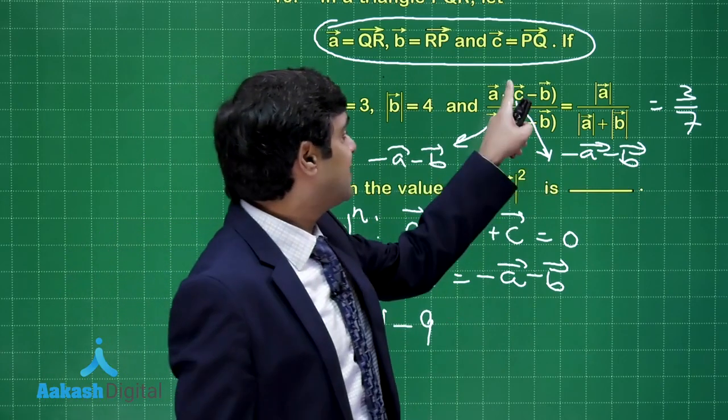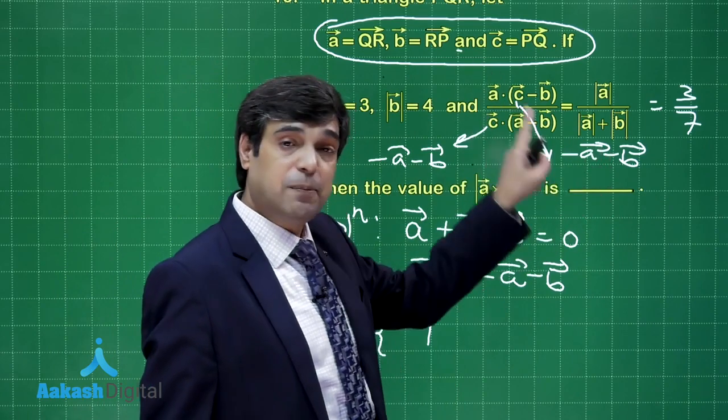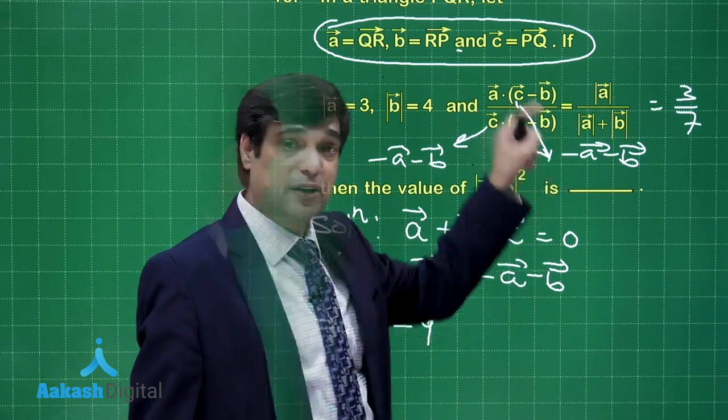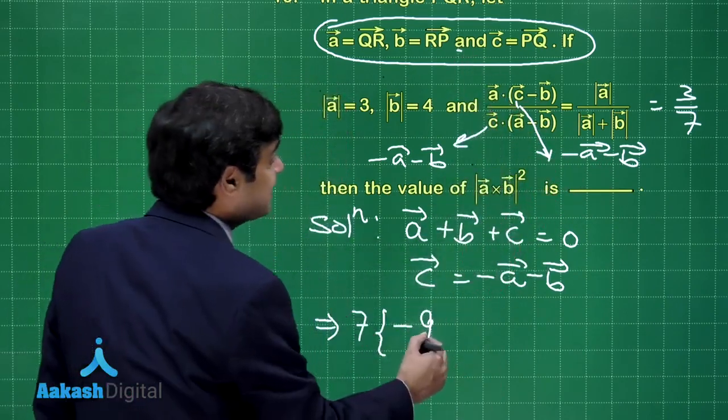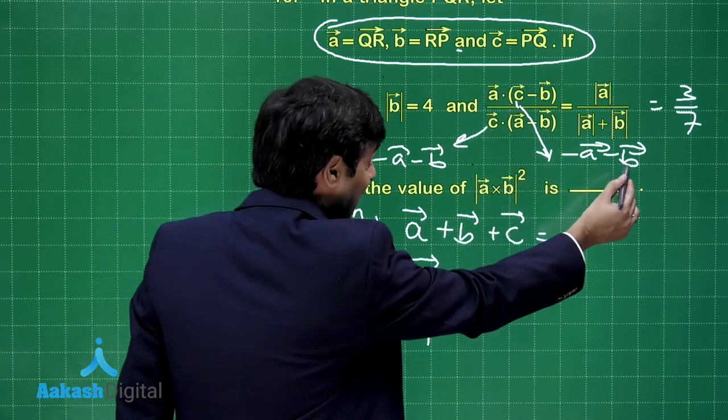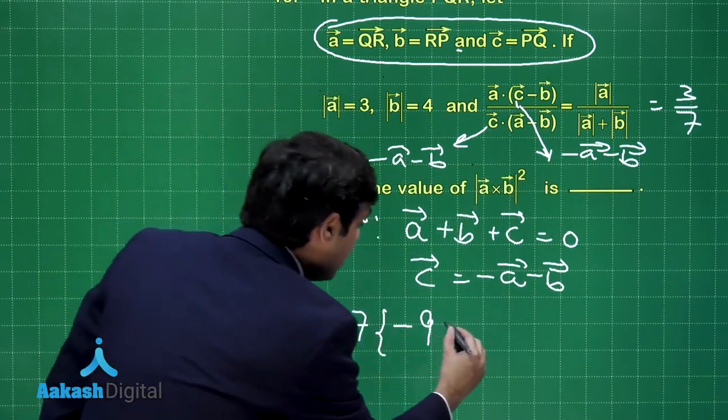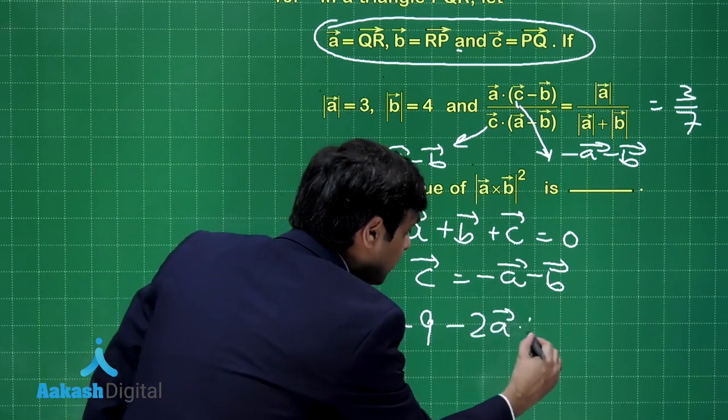I have replaced this C with minus A minus B. So we have minus A minus 2B multiplied dot product with A vector. So that gives you minus 9, then A dot 2B. So we have minus twice of A dot B.